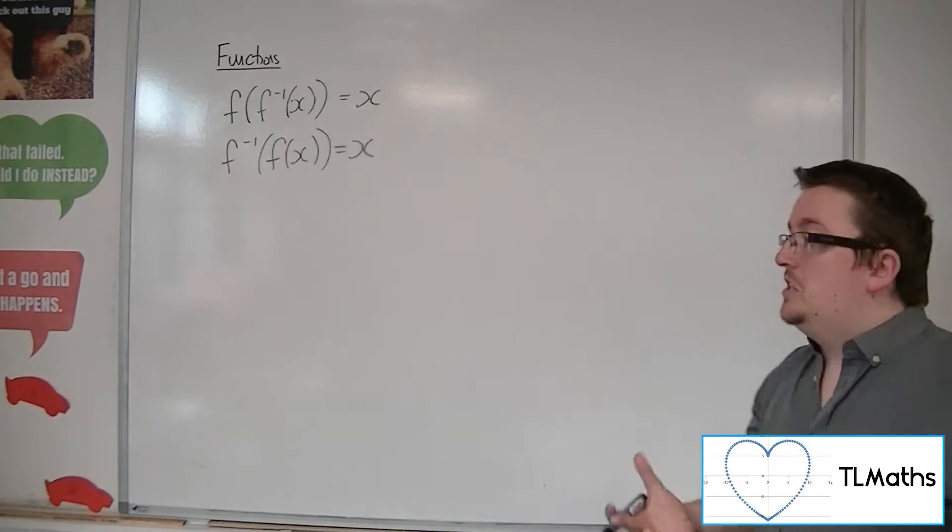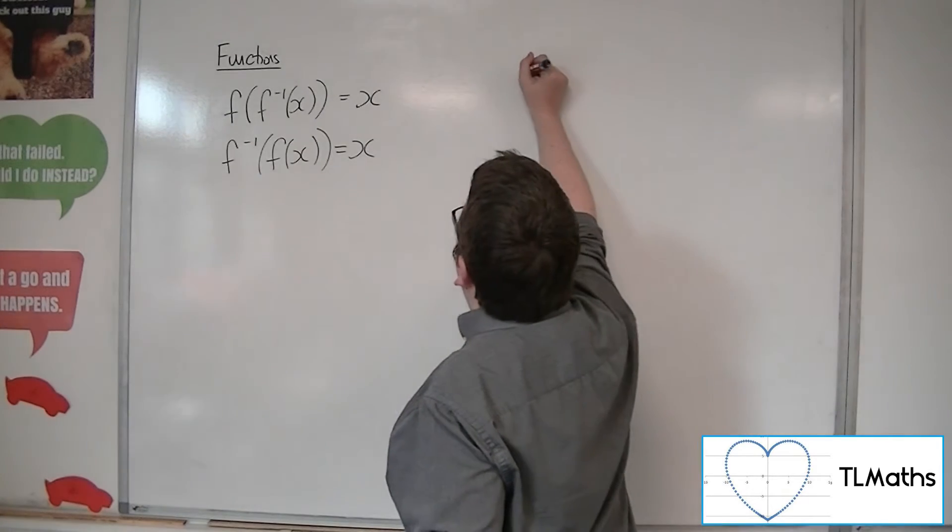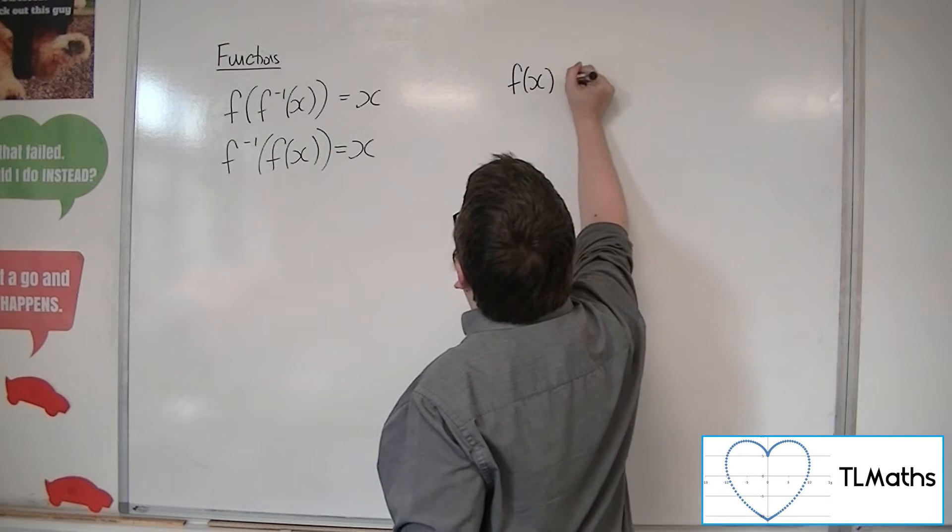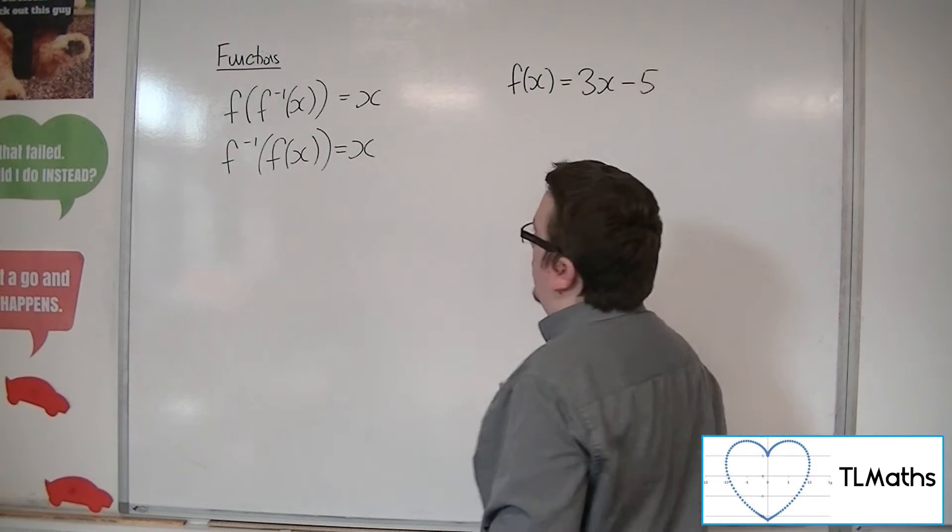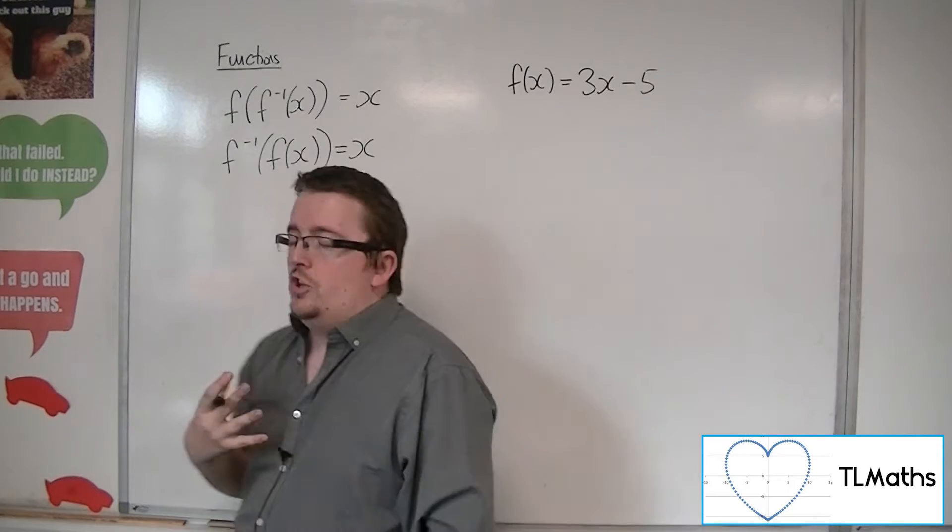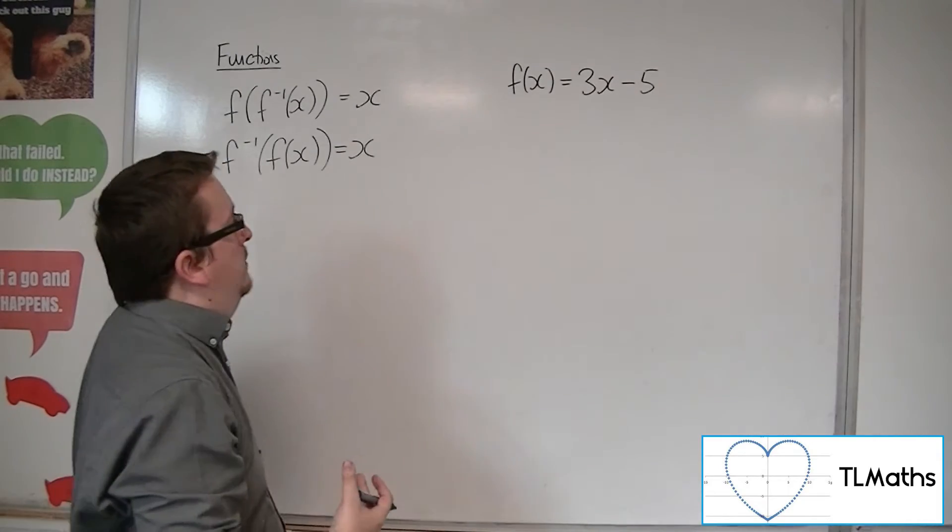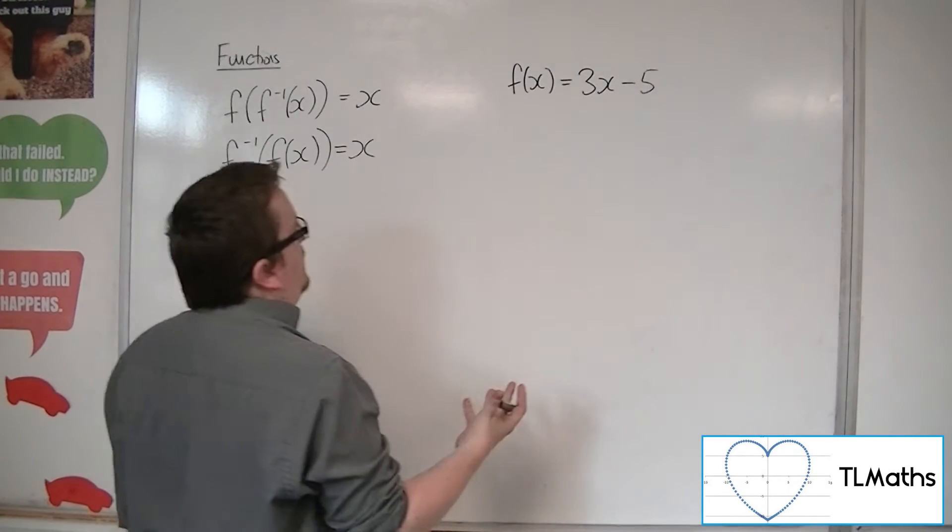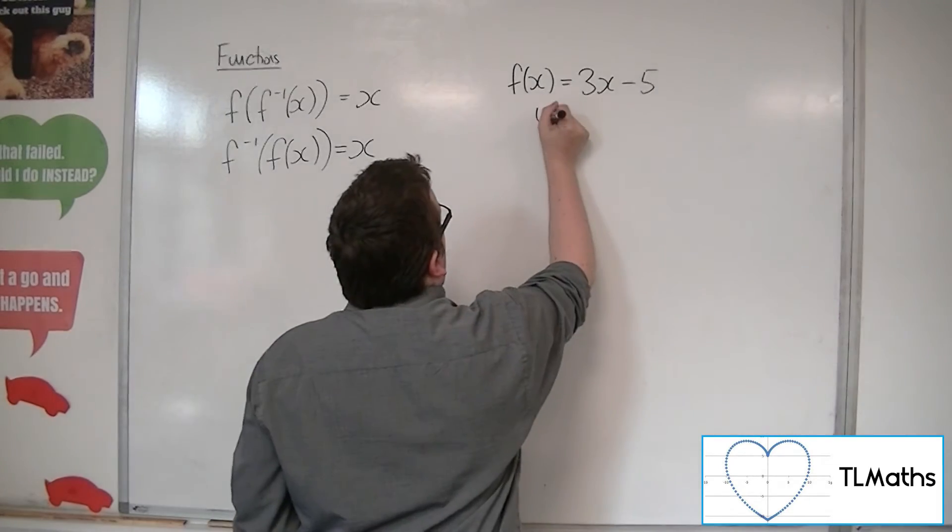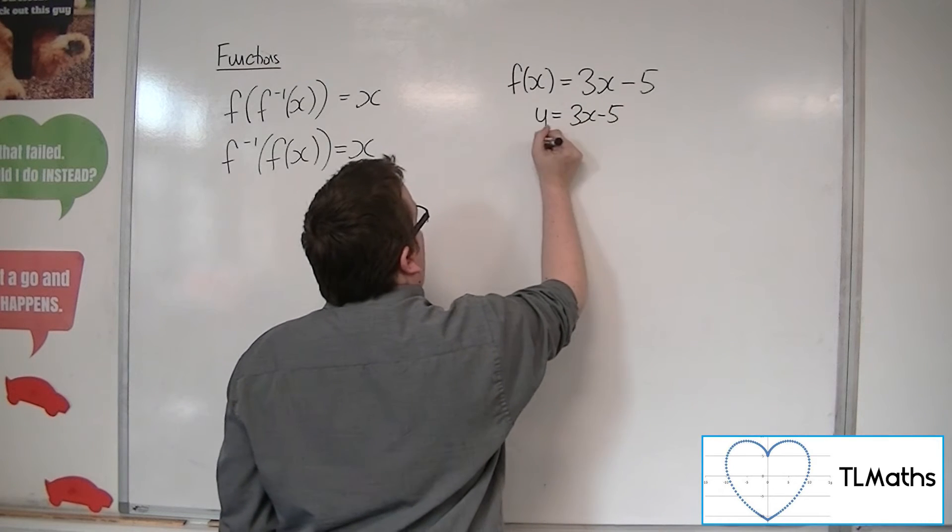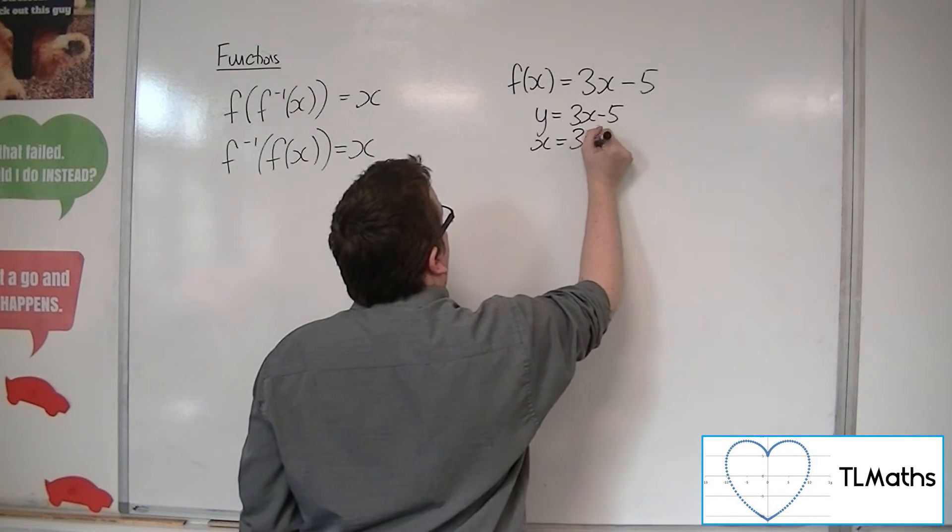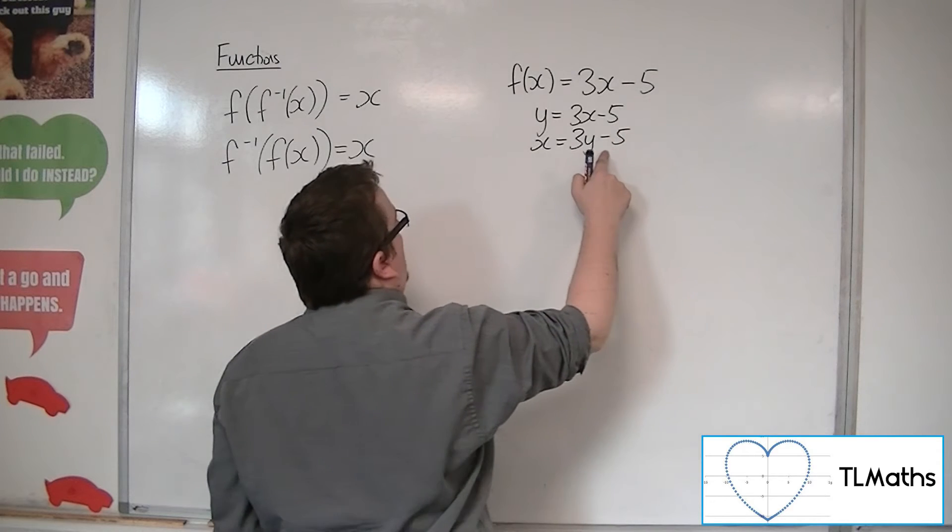So an example of this might be f of x is equal to 3x minus 5. If we just look at this as a basic example, first of all I need to find the inverse function. So y is equal to 3x minus 5, swap the x's and y's, and then rearrange this to get y equals.